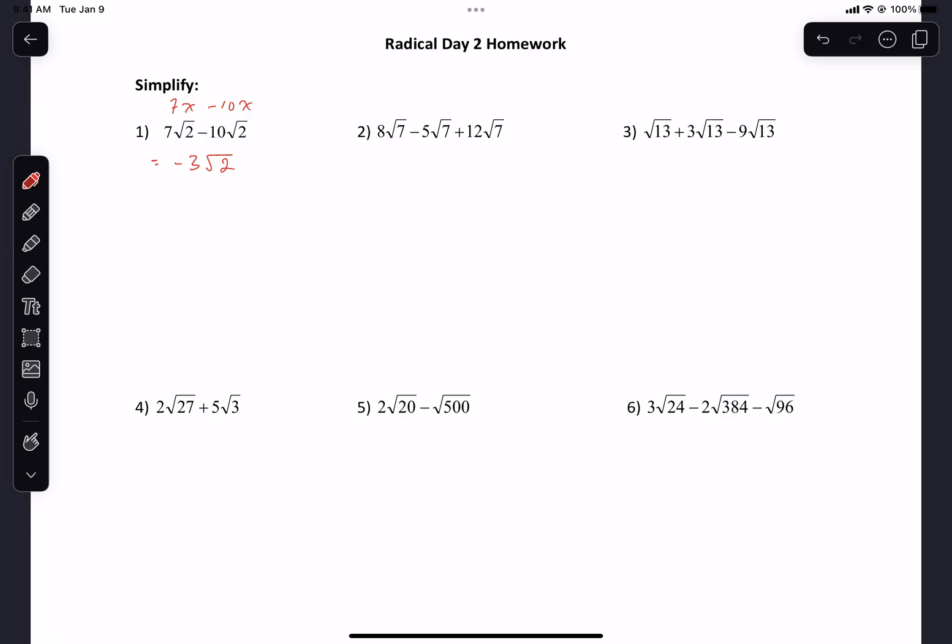What about this one? 8 minus 5 plus 12. 8 plus 12 is 20, take away 5 should be 15 root 7s. Can I simplify root 7? No, so we're done.